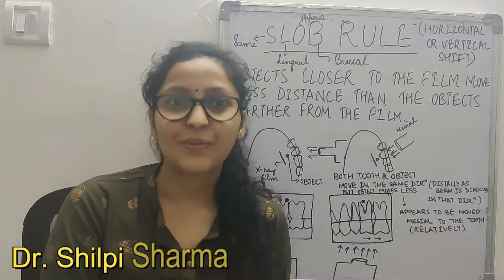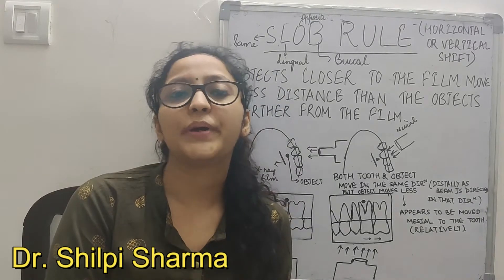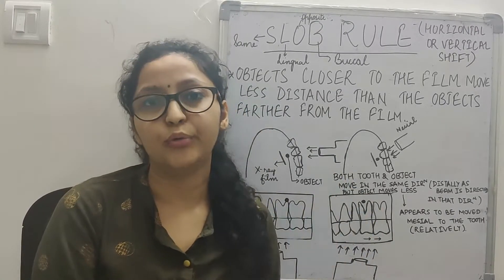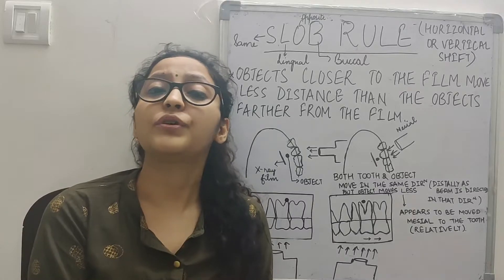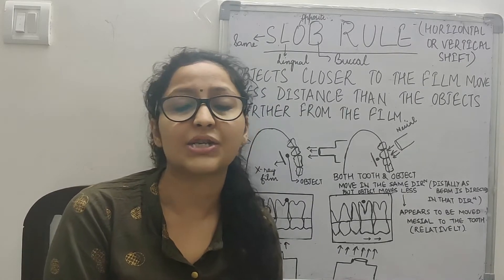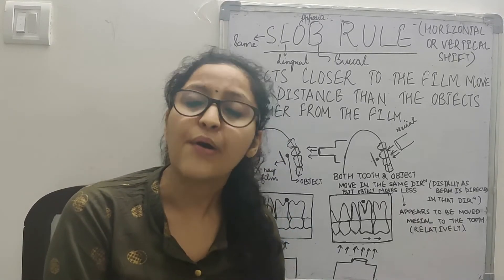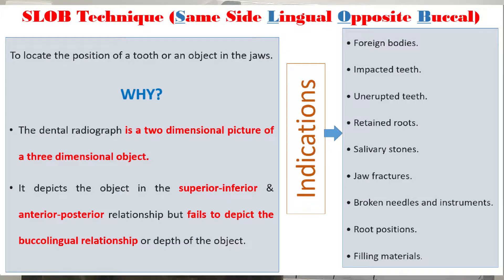Welcome back to my channel. In this video we will be talking about a very small but very important topic - the SLOB rule. It is one of the oldest and commonly used object localization techniques in dentistry. Whenever there is any kind of foreign body, supernumerary tooth, or impacted tooth present in the oral cavity, or if you want to localize the position of any object in the jaws, we use this object localization technique.